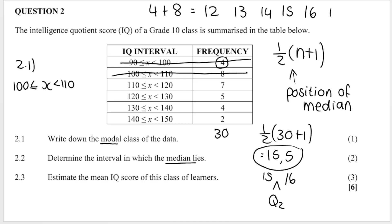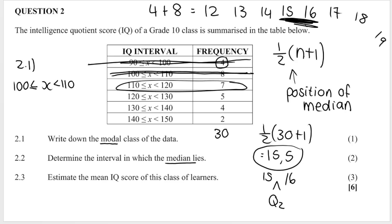The first four lie in the first interval, the next eight bring us to 12 in the second interval, then the 13th, 14th, 15th, and 16th lie in the third interval. So the 15th and 16th learners both lie in the third interval, which is where the median lies.